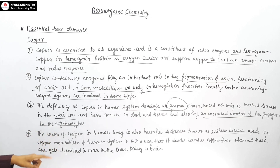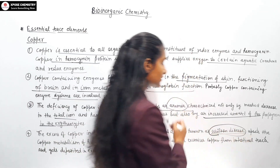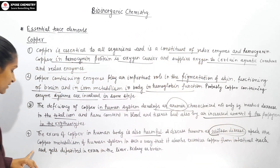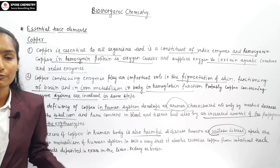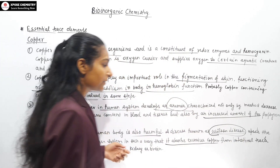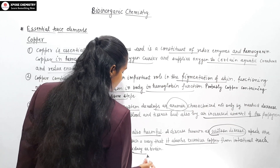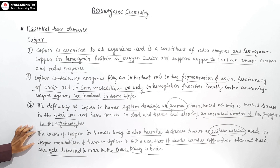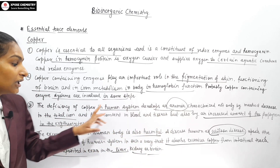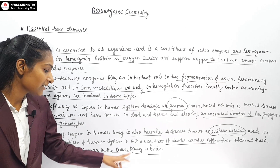Excess copper in the human body is also harmful and causes Wilson disease. Wilson disease upsets copper metabolism in the human system. Excessive copper absorbed in the intestinal tract is deposited in excess in the liver, kidney and brain.